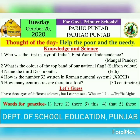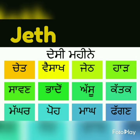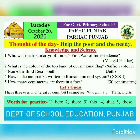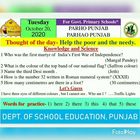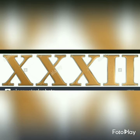Third question: name the third desi month. The third desi month is Jeth. Fourth question: how is the number 32 written in the Roman numeral system? The number 32 is written as XXXII.